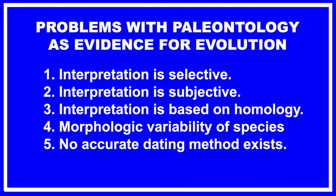The fossil record is often used as if it's evidence for evolution, when in fact the fossil record has never supported the idea of evolution. The only reason it's used is because all the other arguments for evolution have failed. I'm going to point out five serious problems in using the fossil record as evidence for evolution: interpretation is selective, it's subjective, it's reliant entirely on homology — which is a failed argument — the morphologic variability of species is generally ignored, and there is no accurate method of dating a fossil.